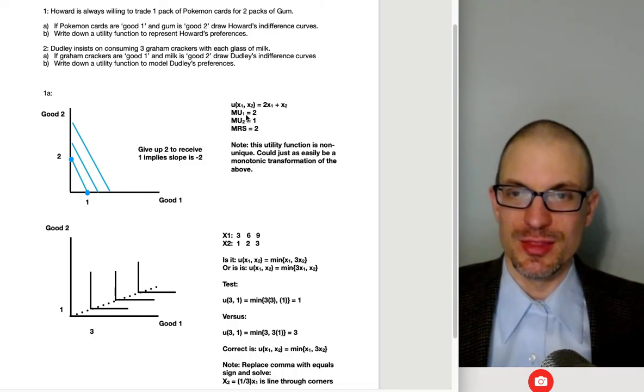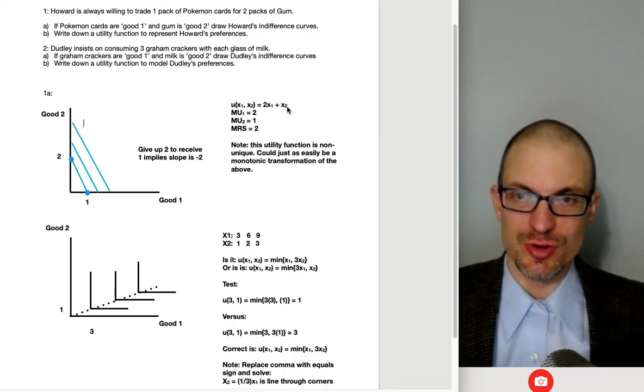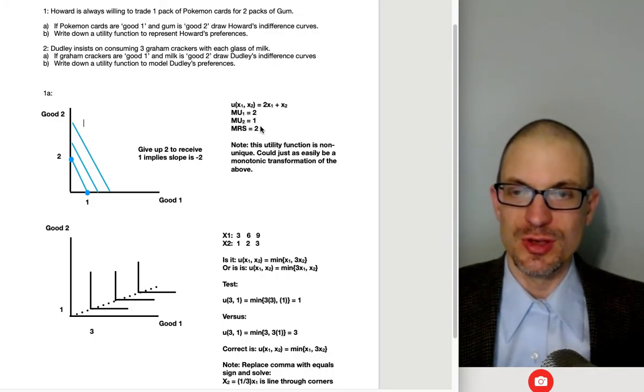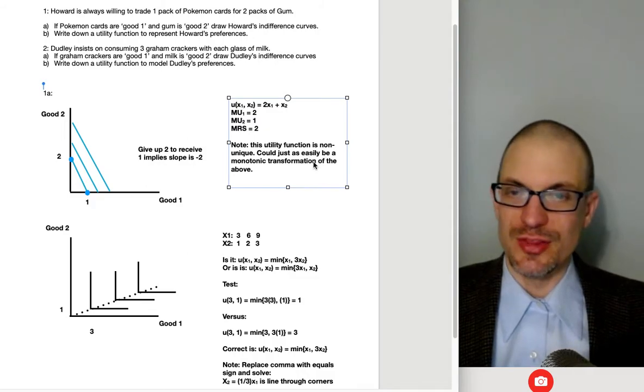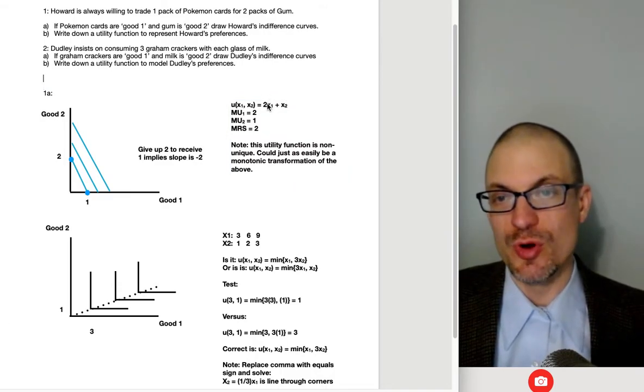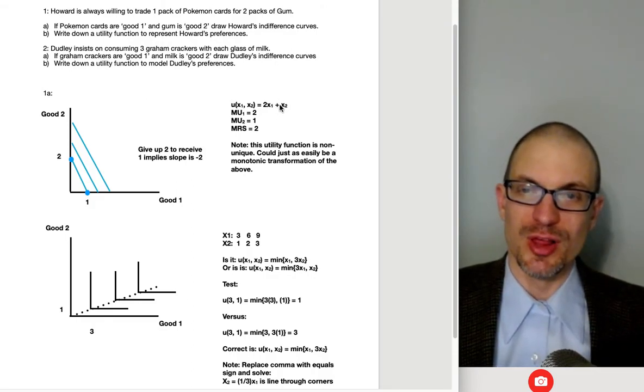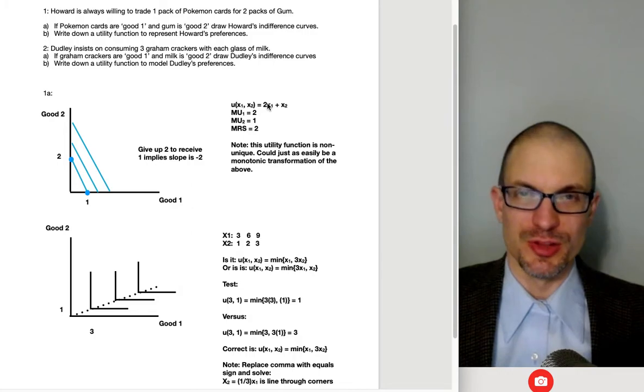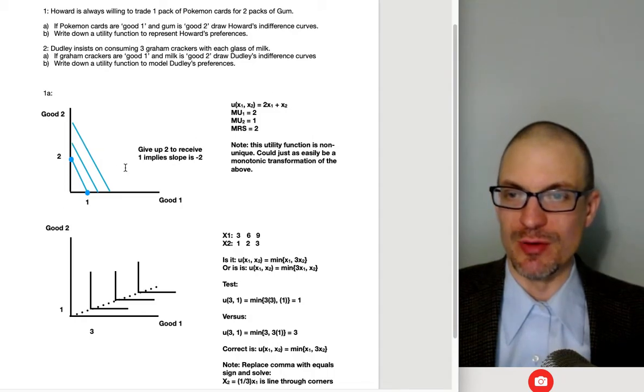Anyway, so here, yeah, indeed, the marginal utility of good one is two. The partial derivative with respect to X1 is two. Partial derivative with respect to X2 is one. Ratio of those marginal utilities, MU1 divided by MU2, that's two. So the MRS, marginal rate of substitution, is two in this case. And here's my note. Yeah, this utility function is non-unique. This could just as easily be a monotone transformation of the above. I don't know. Maybe you wrote this down as like 4X1 plus 2X2. That's just as good. What would be a mistake? Well, it'd be a mistake to have X1 plus 2X2, right? At least given these labeling conventions for the axes, that would be a problem.